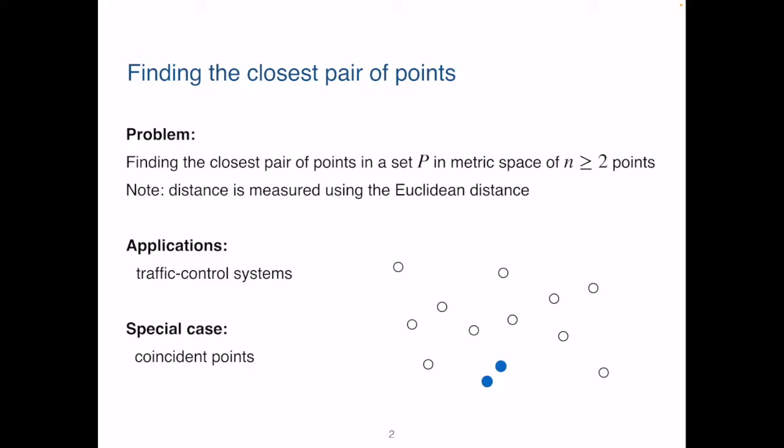Applications of this problem include a system for controlling air or sea traffic. For instance, they might need to identify the two closest vehicles in order to detect potential collisions.